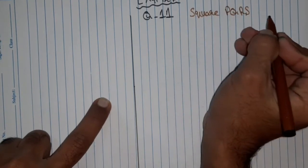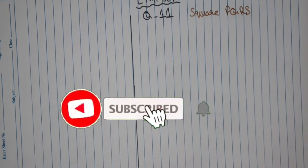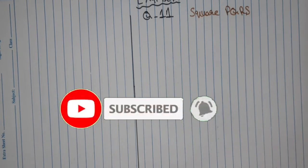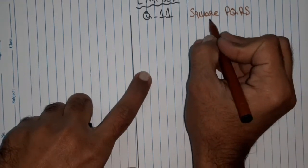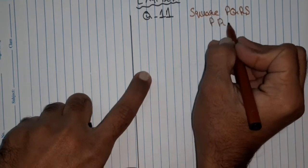In previous videos we have seen how to draw a square. In this video we will draw a square where the length given is PR equal to 10 cm.